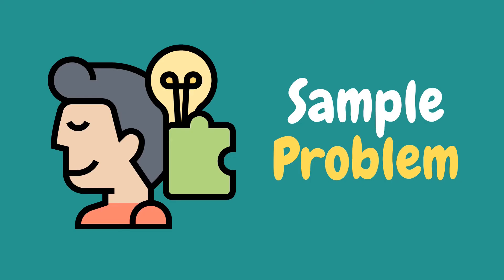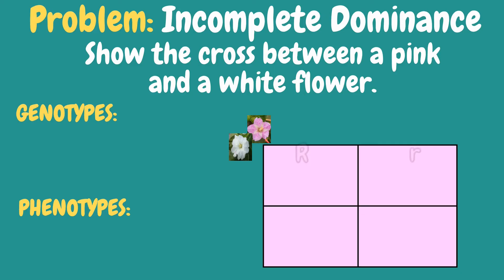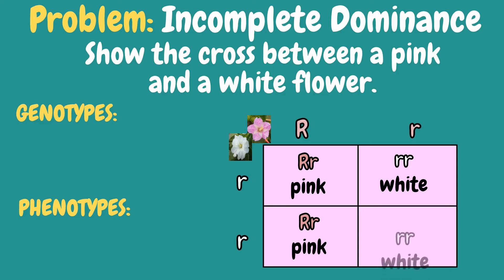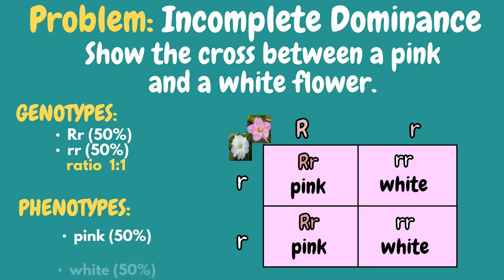Let's try to solve sample problems and determine the phenotypic and genotypic ratio using the Punnett square. Show the cross between a pink and a white flower. The possible phenotypes and genotypes of the cross are: pink, white, pink, and white. Based on the Punnett square, the genotypes are 50% heterozygous pink and 50% homozygous recessive white, giving a 1:1 ratio. For the phenotypes, we have 50% pink and 50% white, also giving a 1:1 ratio.